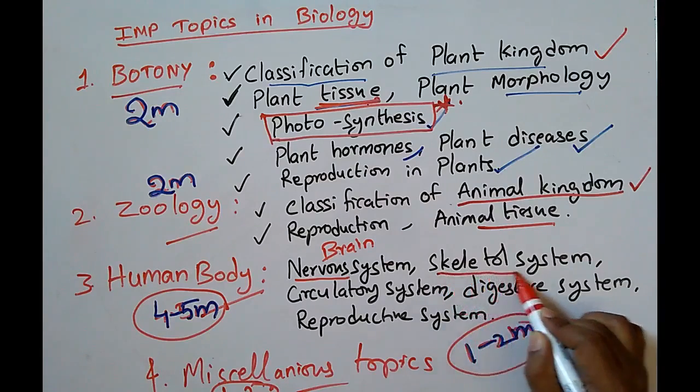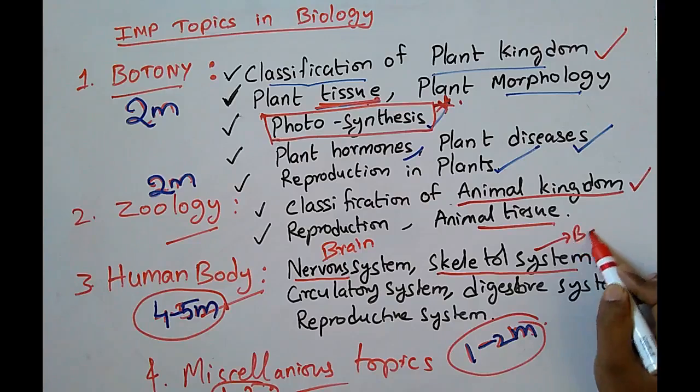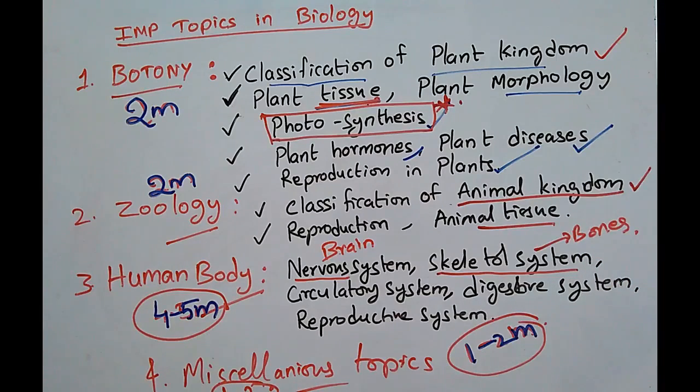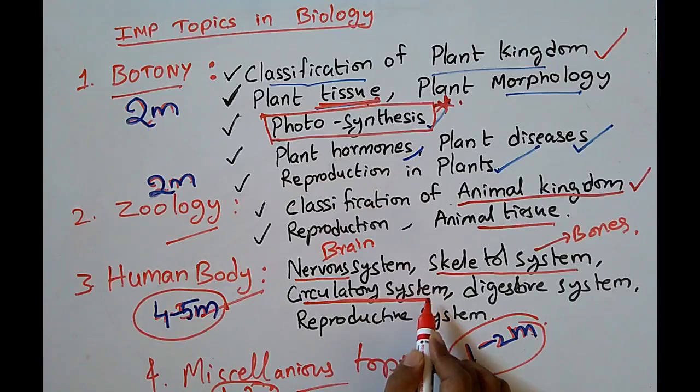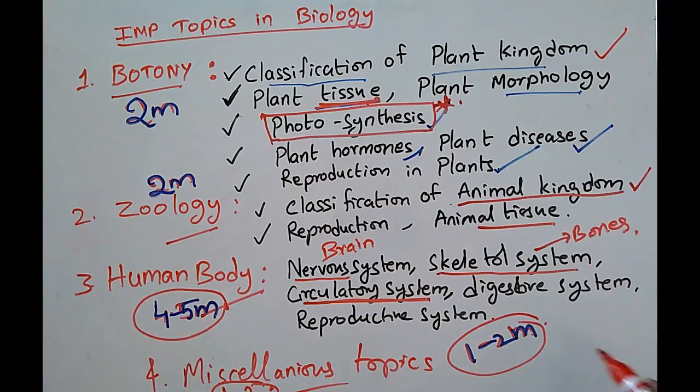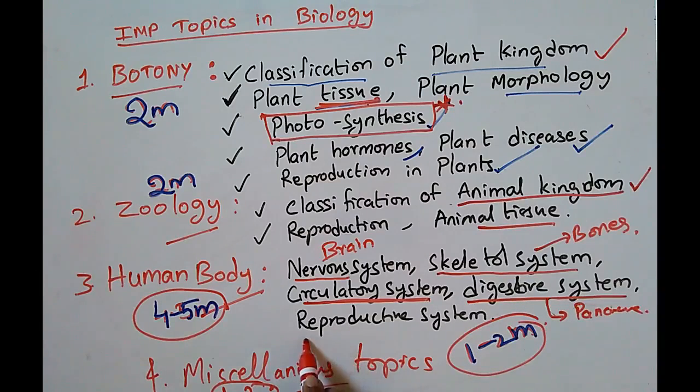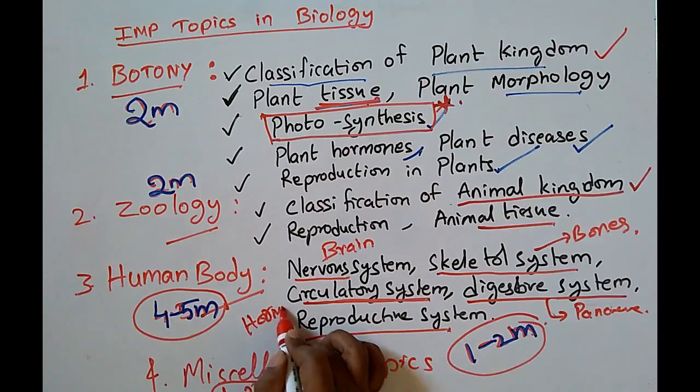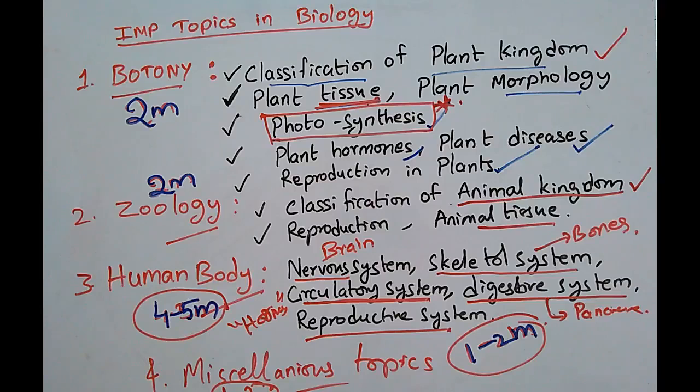We have to look into skeletal system where you study about bones, how many bones are there in a child and in an adult. In circulatory system we are going to study human blood, heart, veins and arteries. Digestive system and finally reproductive system. There are some miscellaneous and interrelated topics such as hormones and glands which control the functions of different organs in our body.